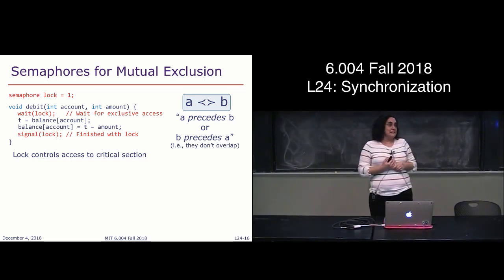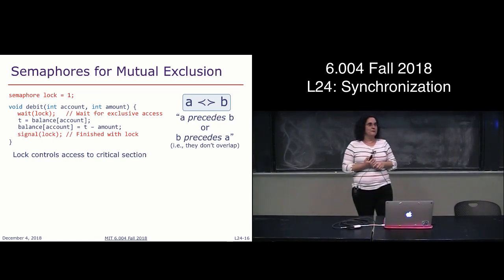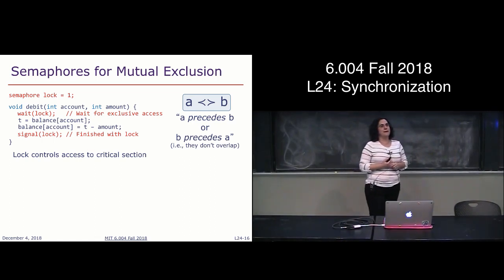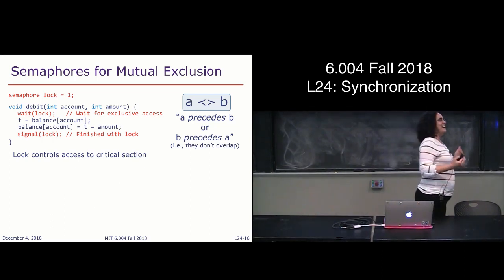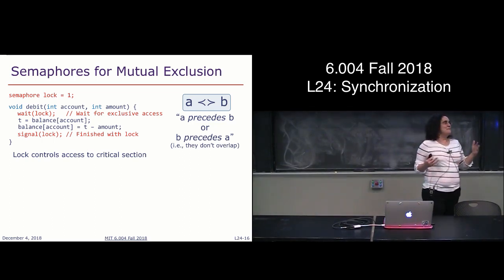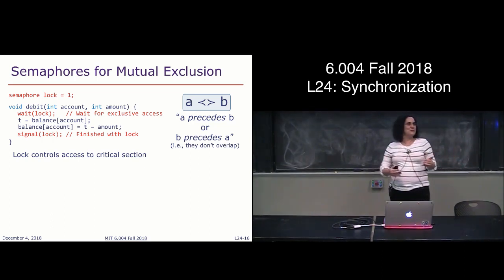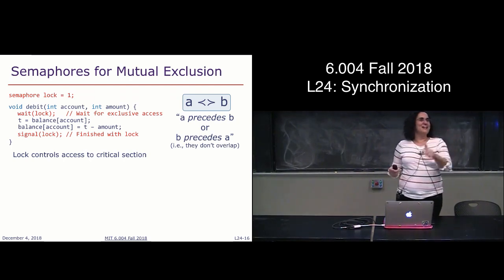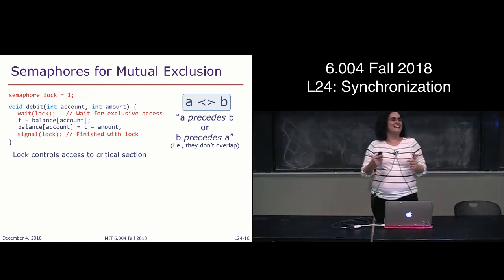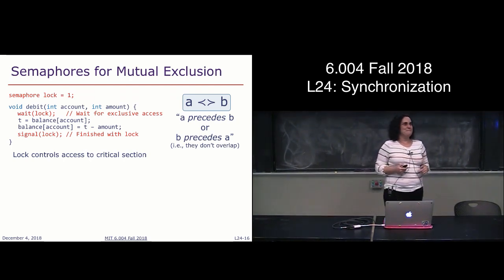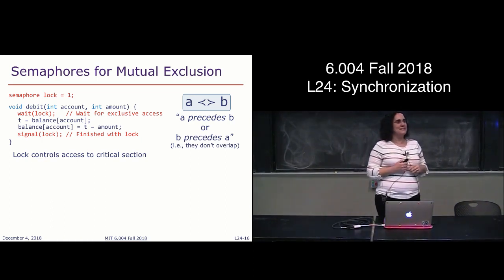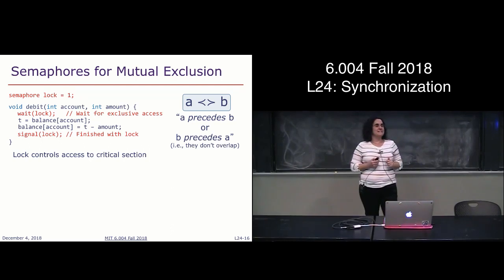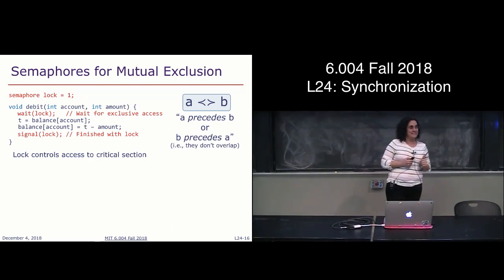This is actually a difficult problem to solve. You need semaphores to make sure you check and update the lock atomically — otherwise the same race condition applies to the lock itself. We'll get to how it's actually implemented shortly, but it's not a trivial answer.